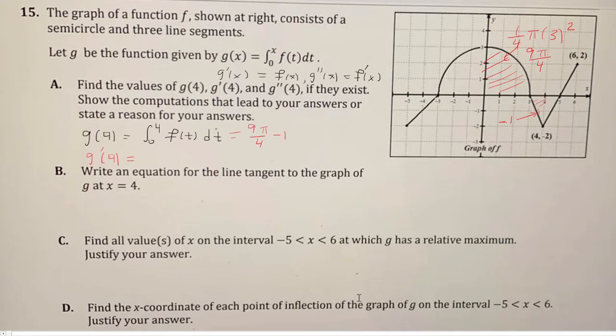Now for g prime of 4, that's the same thing as f of 4, because g prime of x is f of x. If we go on the graph here, we find where f of 4 is, and they actually give us the point here. So that's negative 2.